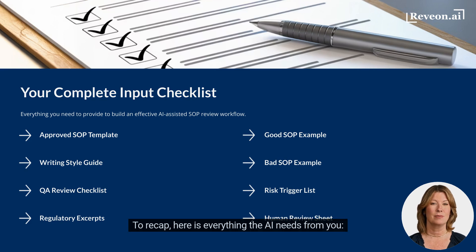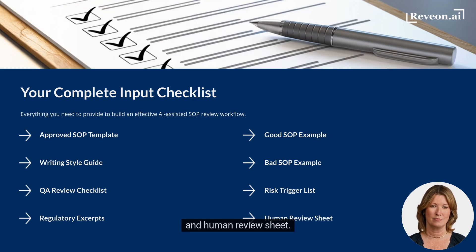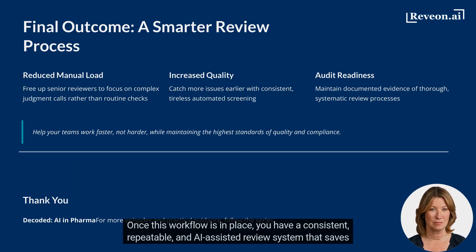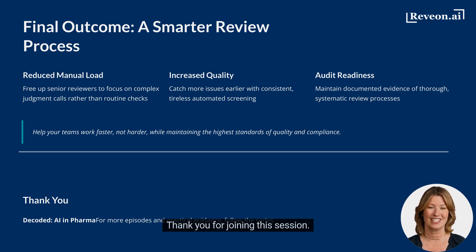To recap, here is everything the AI needs from you: your SOP template, style guide, QA checklist, regulatory excerpts, good and bad examples, risk trigger list, and human review sheet. Once this workflow is in place, you have a consistent, repeatable, and AI-assisted review system that saves time and enhances quality while keeping full human oversight. Thank you for joining this session.